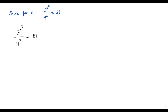Here we are trying to solve for the variable that is at the exponent. Whenever we are trying to solve for a variable that is at the exponent, we should be trying to get the same base on both sides. Once we get the same base on both sides, we can equate the exponents and solve for the variable.